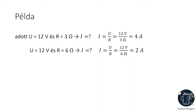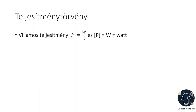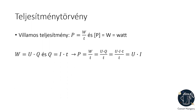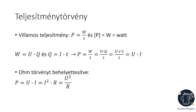Hogyan választjuk meg az ellenállást? A kérdést a teljesítménytörvény segítségével értelmezhetjük. A villamos teljesítmény az időegység alatt elvégezett munkát jelenti, azaz a villamos munka és az idő hányadosa a villamos teljesítmény, amit nagy P-vel jelölünk, mértékegységét nagy W-vel jelöljük és wattnak mondjuk. A feszültség és az áram definiáló képletéből levezethető, hogy P = U · I. Ez a villamos teljesítménytörvény. Az Ohm törvénnyel együtt: P = I² · R = U² / R.